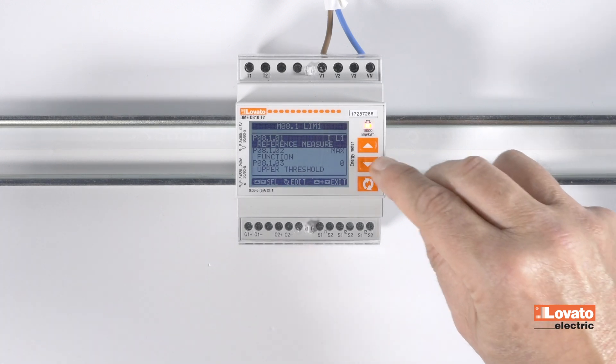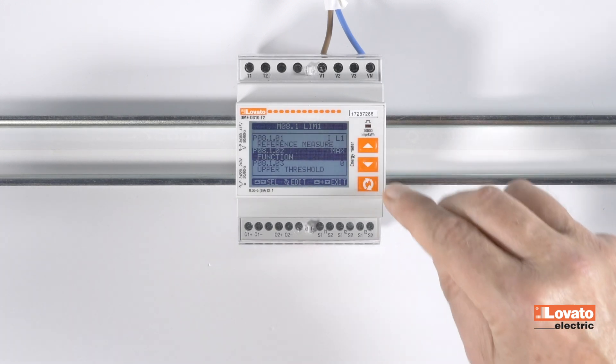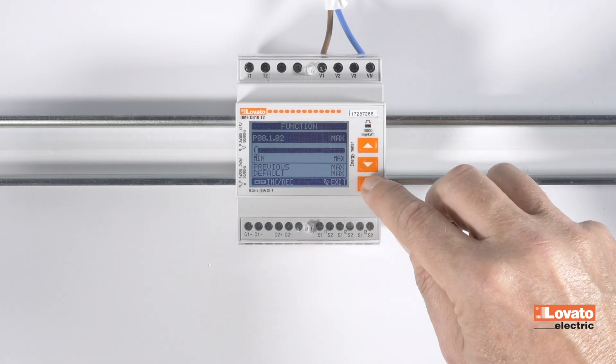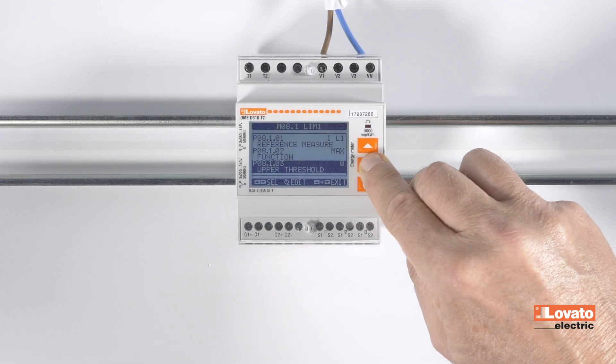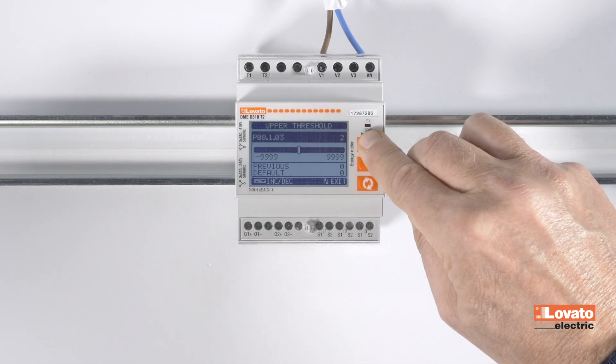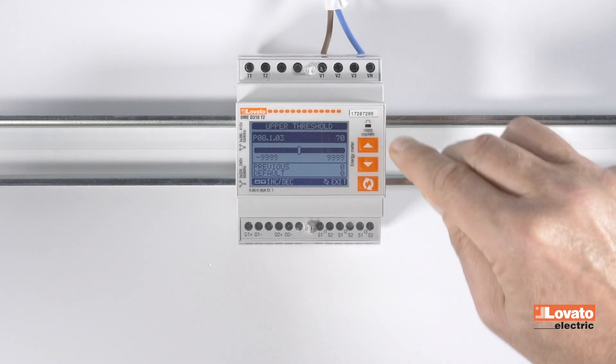Edit the function item, in this case, the maximum threshold. Now, enter the menu for the upper threshold. Current amperes, 70, with the up and down keys.